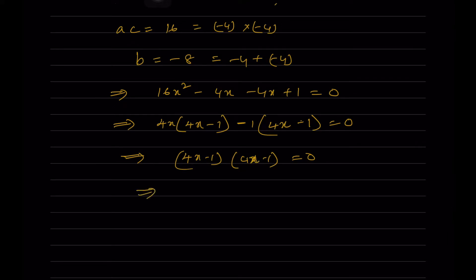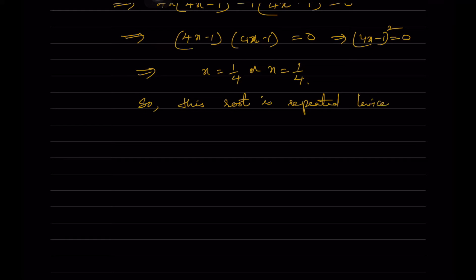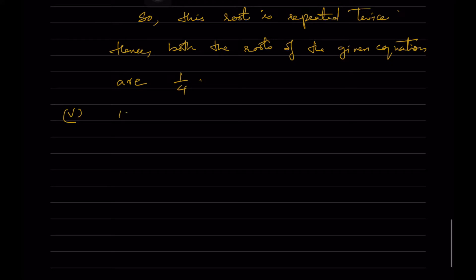So 4x - 1 = 0 gives x = 1/4. This root is repeated twice. Hence both the roots of the given quadratic equation are 1/4. The fifth part: 100x² - 20x + 1 = 0, where a = 100, b = -20, c = 1.